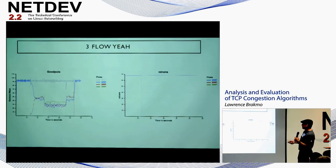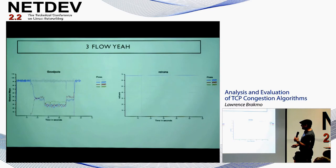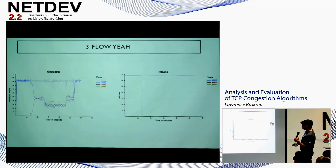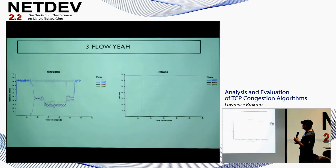NV also does really well — uses bandwidth with one flow, and when another flow starts they very quickly converge. The aggregate goodput line looks pretty good, with only about 7,000 retransmissions initially during slow start and almost none after. So NV looks really nice.